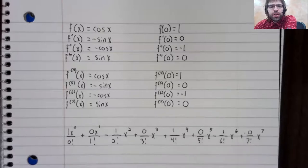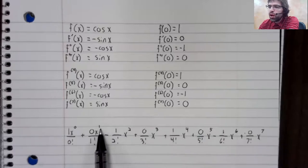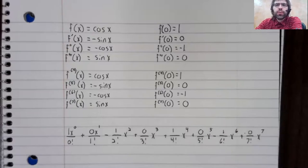Now notice that every other term here is zero. So that corresponds to one, three, five, seven. In other words, all of the odd power terms vanish.